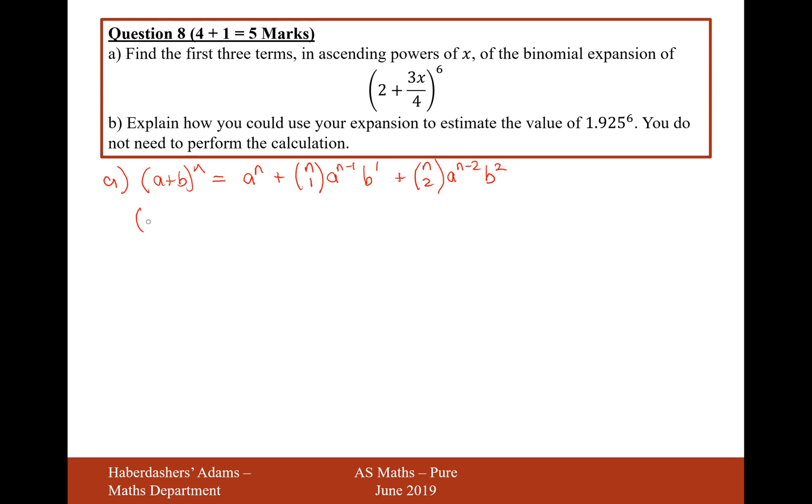So in our binomial expansion here, (2 plus 3x over 4) to the power of 6, A is effectively 2, B is effectively 3x over 4, and N equals 6.